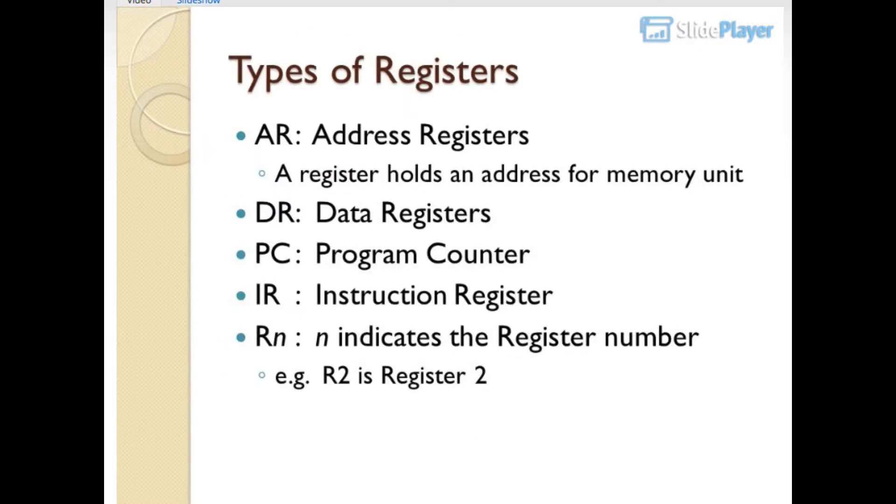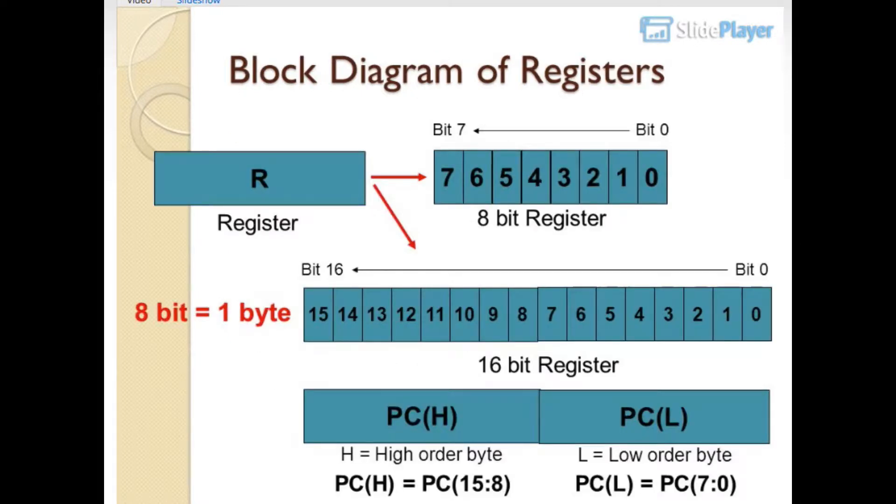Types of registers are address registers, data registers, PC program counter, IR instruction register. RN indicates the register number, for example R2 is register 2.